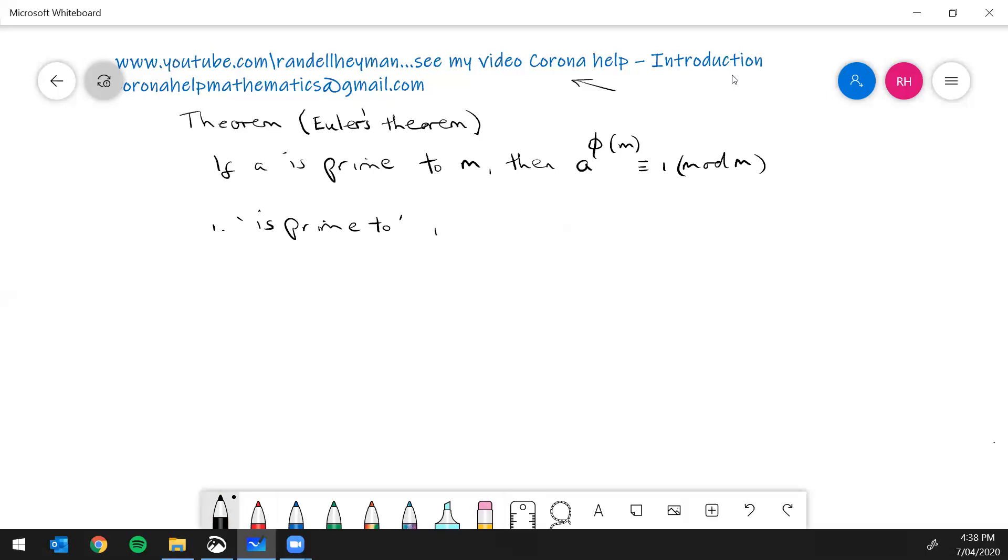Okay now 'is prime to' - what does that mean? 'Is prime to' means co-prime or has a gcd of one with respect to, in this case m. So a is prime to m, that's the same thing as a is co-prime to m, and that's the same as the gcd of a and m is equal to one. So I think that's all I want to say about 'is prime to'.